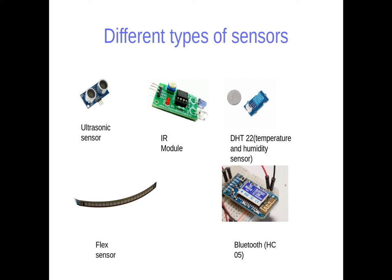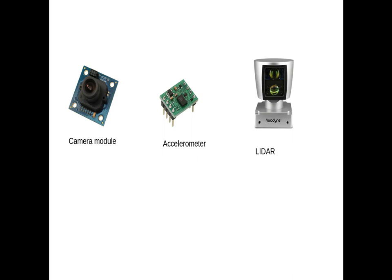Then we have the flex sensor, which changes its resistance when bent — it is very flexible and you can bend it, and it changes its resistance with the degree of bend, giving an analog value of resistance. Then we have the Bluetooth module — this one is the HC-05 — used for Bluetooth communication to make your robots or devices wireless. Then we have the camera module. Cameras are basically not sensors by themselves, but they become sensors when you are doing computer vision or image processing applications — when you are detecting something with the camera like using it as your own eye.